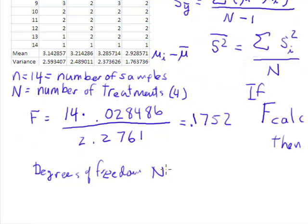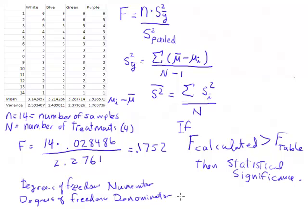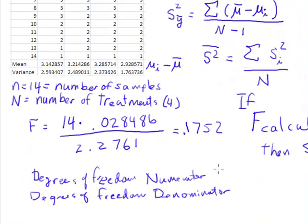There's degrees of freedom for the numerator and degrees of freedom for the denominator. The numerator is the variances between treatments. And since there's four different treatments, the degrees of freedom for that one turns out to be 4 minus 1 equals 3.